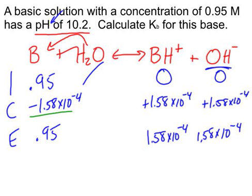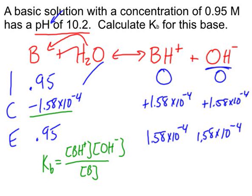So now we're calculating Kb. Kb is defined in this particular reaction. It will be BH plus times OH minus divided by the concentration of the base. And so plugging in these numbers, it's going to give me 1.58 times 10 to the negative 4, and that will be squared because I'm multiplying by it twice, divided by 0.95.